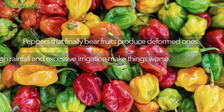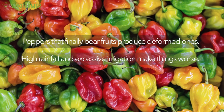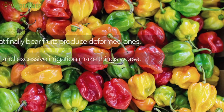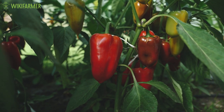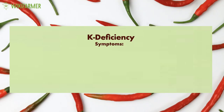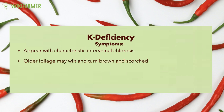High rainfall and excessive irrigation make things worse. Potassium Deficiency. The symptoms of potassium deficiency appear most of the time with characteristic interveinal chlorosis. Older foliage may wilt and turn brown and scorched. There is a low fruit setting rate and the peppers are smaller than usual.